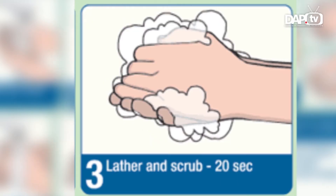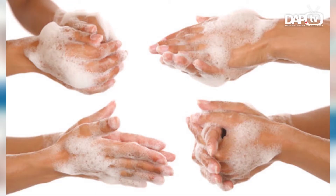Then lather hands by rubbing them together with the soap. Scrub all surfaces of your hands including the palms, the back, the fingers, between your fingers, and under your nails. Keep scrubbing for 20 seconds.